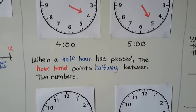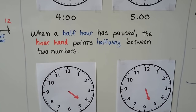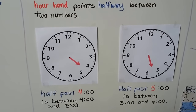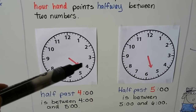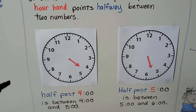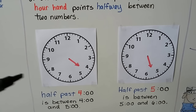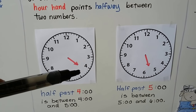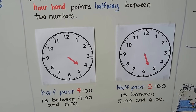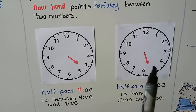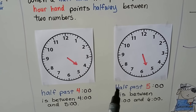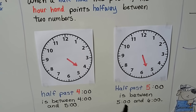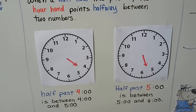When a half hour has passed, the hour hand points halfway between two numbers. It's in between the four and the five — that's half past four. The hour hand is in between the four o'clock and the five o'clock. Here the hour hand is in between the five and the six — it's half past five, in between five o'clock and six o'clock.